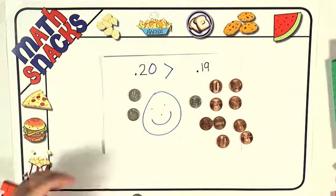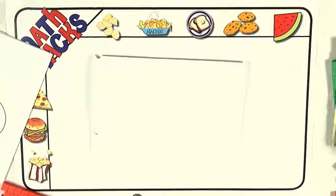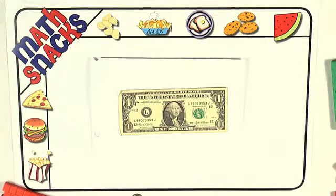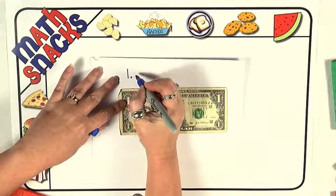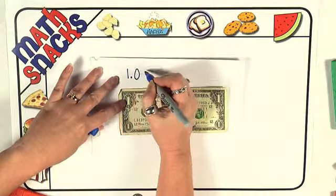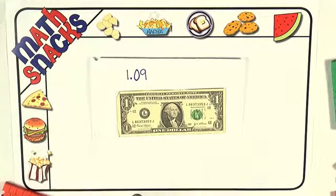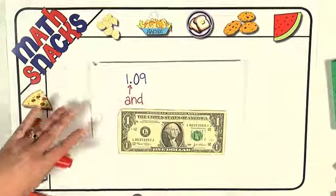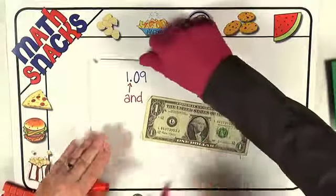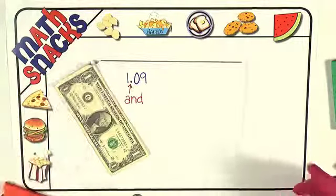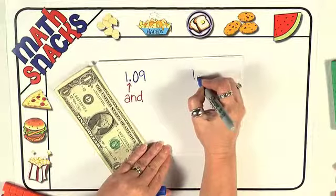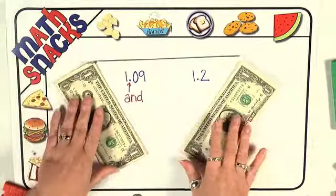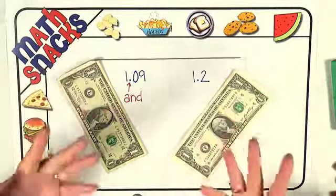I have one more for you. This time we're going to use your favorite thing, that dollar bill. So this time your number is going to be one and nine hundredths. Remember what that decimal point says? It says and. One and nine hundredths. This decimal point means and. And our other number is going to be one and two tenths, one point two. So that means you're going to need another dollar, aren't you?